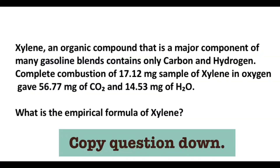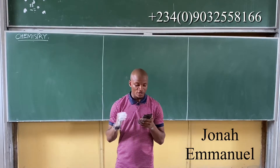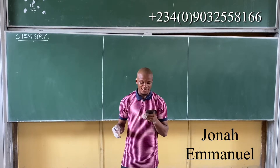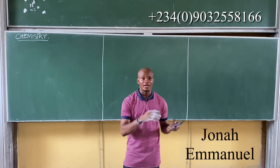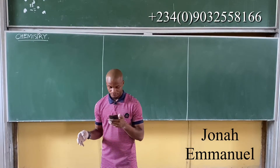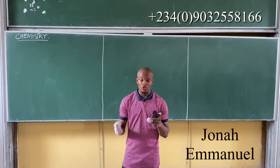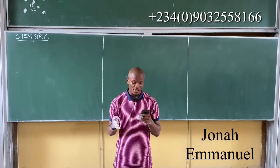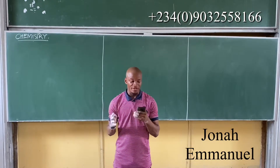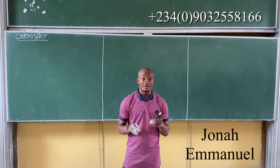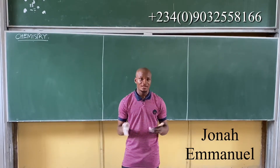Xylene is an organic compound that is a major component of many gasoline blends and is made up of only carbon and hydrogen atoms. A complete combustion of a 17.2mg sample of Xylene gave 56.77mg of carbon dioxide and 14.53mg of water. We are asked to determine the empirical formula of Xylene.